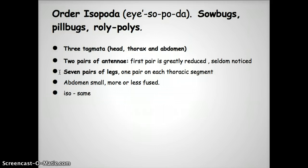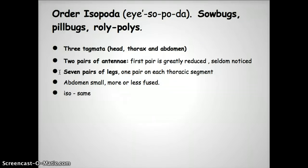Seven pairs of legs is what I want you to know. They have a small abdomen, more or less fused. They have three segments — or tagmata — but for our purposes, we'll just say three segments: head, thorax, and abdomen. That's a little different. When we looked at arachnids, they had a cephalothorax and an abdomen, but here in crustaceans we have varying body segment numbers.